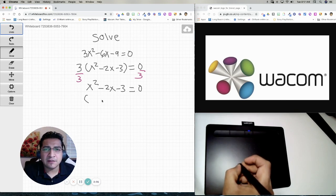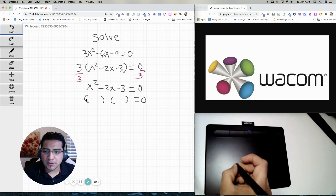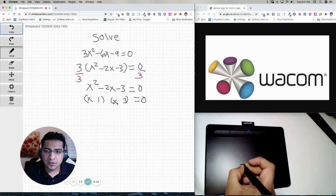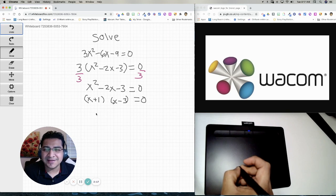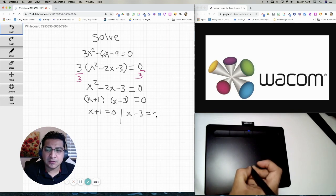All right, and then I can just factor this right here. Okay, so I can do x times x. Factors of 3 that will give you a negative 2. So that's going to be 3 and 1. And I'm going to put negative here and positive here. That looks like it's going to work. Now we can set each of the factors equals to 0. So x plus 1 equals 0. And x minus 3 equals to 0.